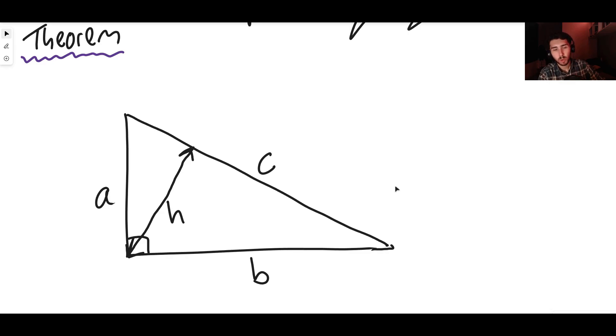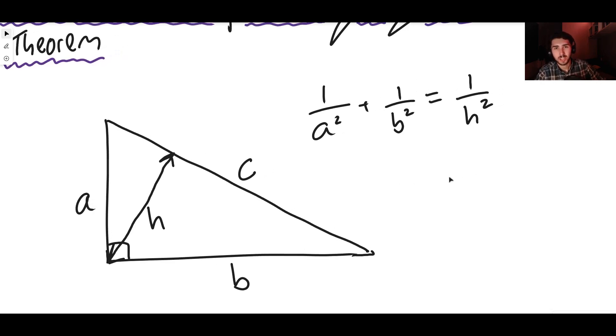Really what h is representing is a different way to measure the height of the triangle. And what we want to do is prove this really cool equation which basically says that 1 over a squared plus 1 over b squared equals 1 over h squared.